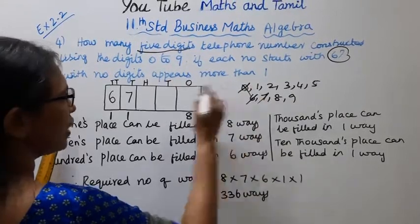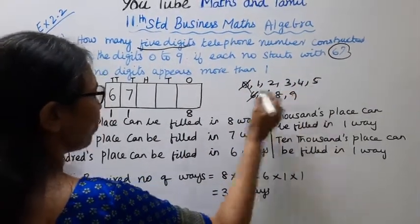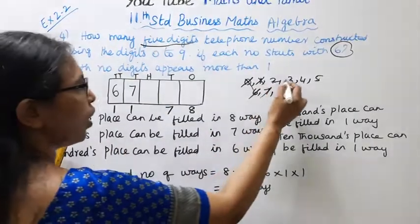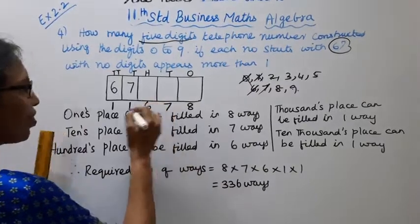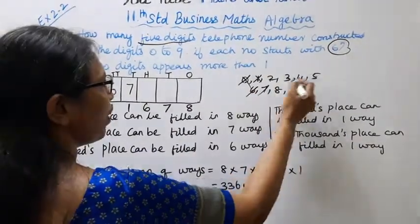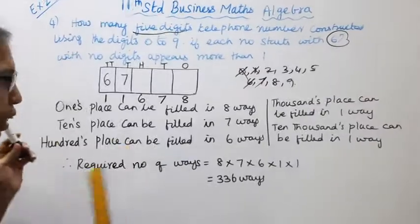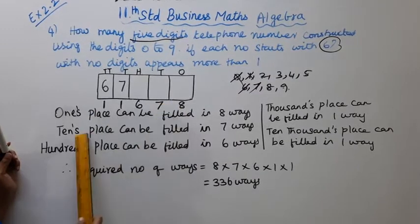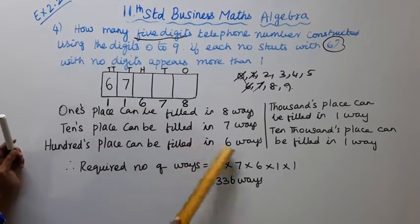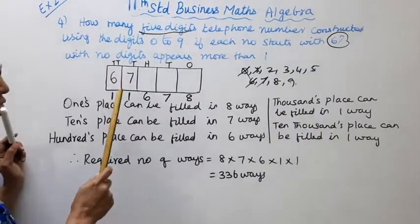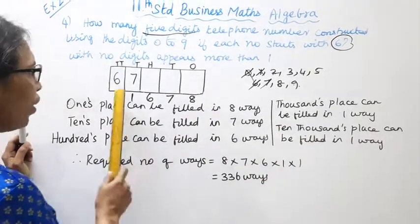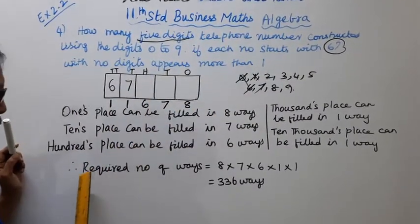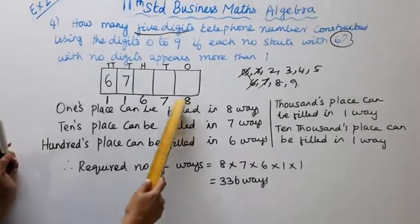The 3rd place can be filled in 8 ways, the 4th place can be filled in 7 ways, and the 5th place can be filled in 6 ways, since no digit can appear more than once.